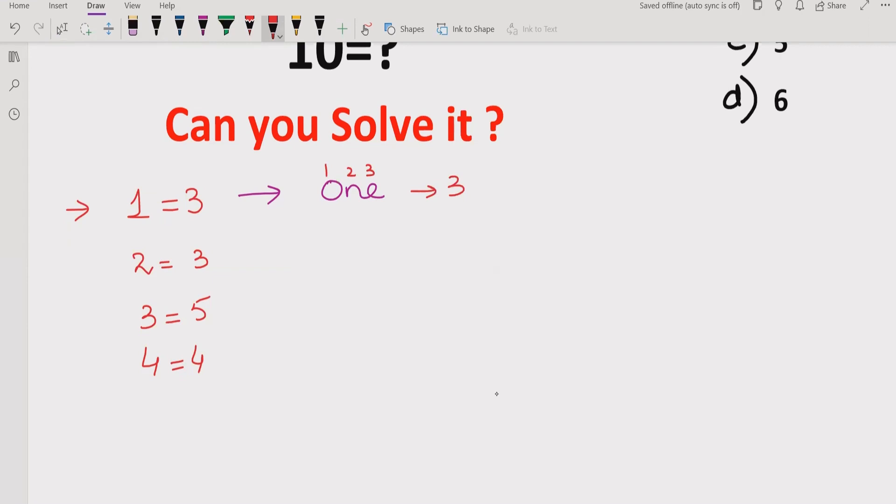Again, if we see for 2, it's T-W-O, which is 1, 2, 3 letters, which equals 3.